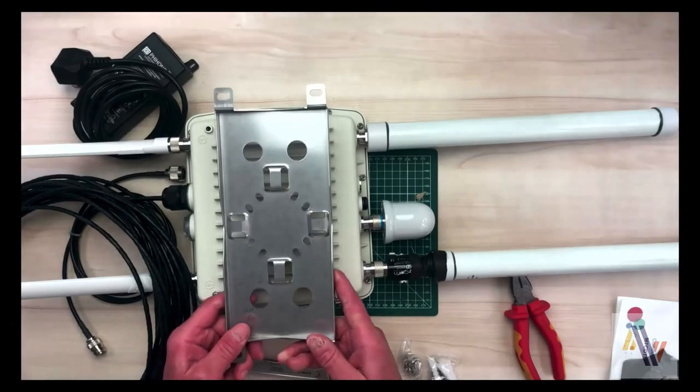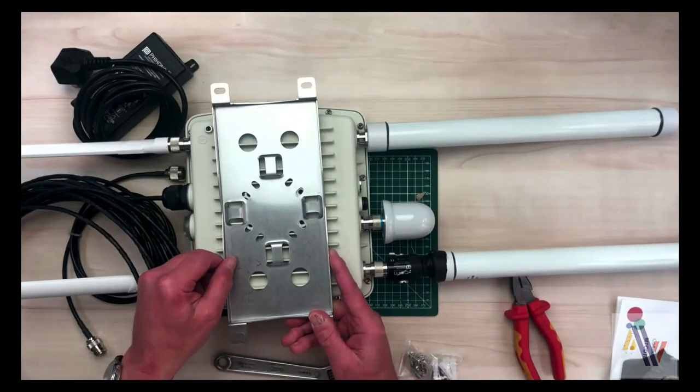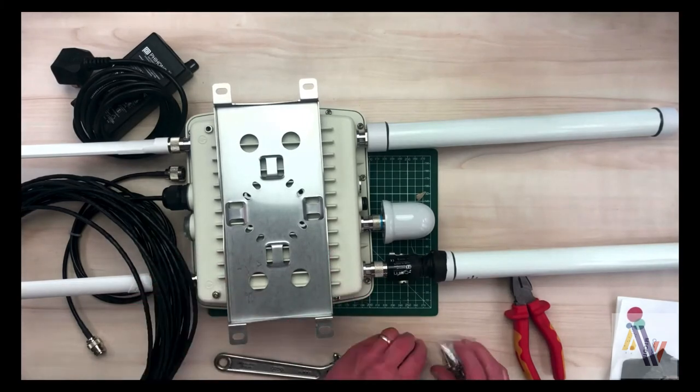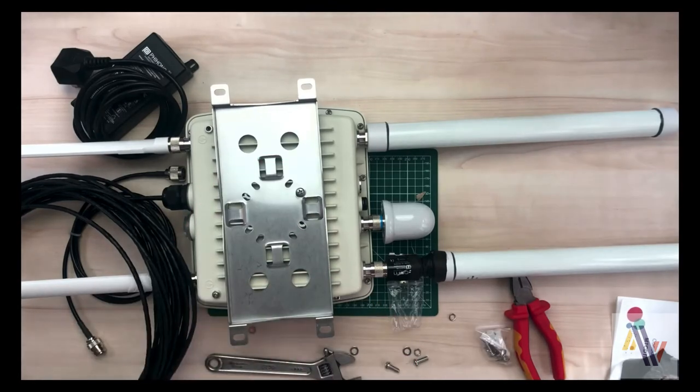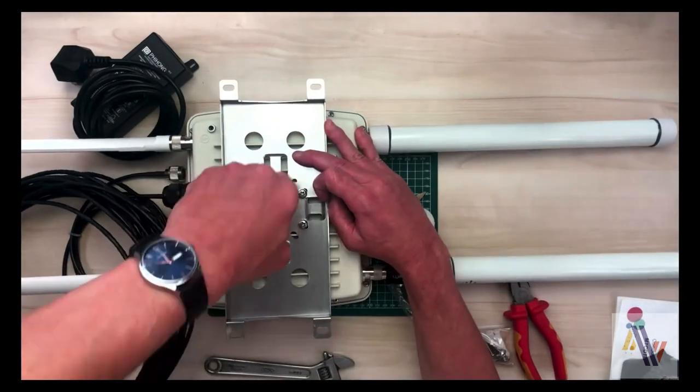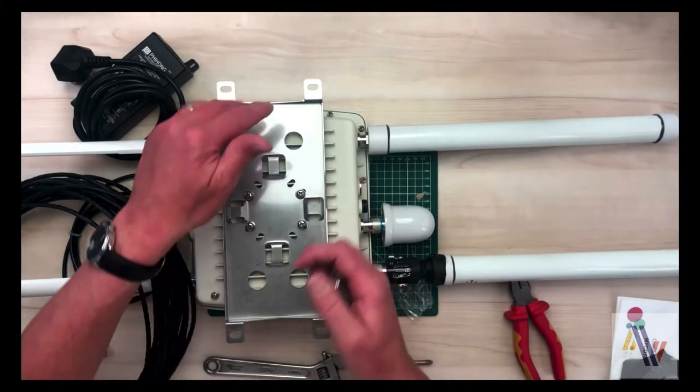Now we have the mounting plates which goes on the back of the unit through these four mounting holes here. Prepare your screw with the star washer and the flat washer. And apply and tighten up.